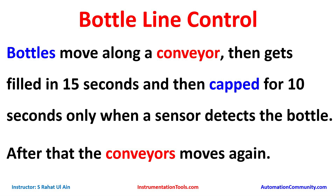In bottle line control, bottles move along a conveyor, then get filled in 15 seconds and then capped for 10 seconds, but only when a sensor detects the bottle. After that, the conveyor moves again. When the start button is turned on, the conveyor will run and move the bottles. When the sensor detects a bottle, filling starts for 15 seconds, then capping for 10 seconds, and then the conveyor moves again.